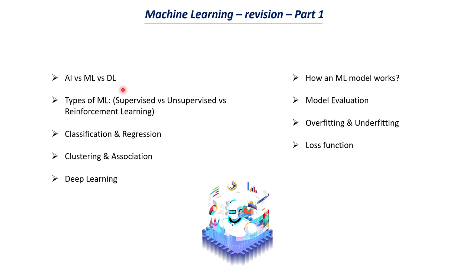First, we discussed the difference between AI, ML, and deep learning, then the different types of machine learning: supervised learning, unsupervised learning, and reinforcement learning. The next topic was the types of supervised learning — classification and regression — and unsupervised learning types, which include clustering and association. We also covered what deep learning is, its applications, and how a machine learning model works.